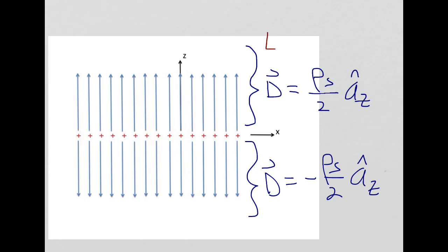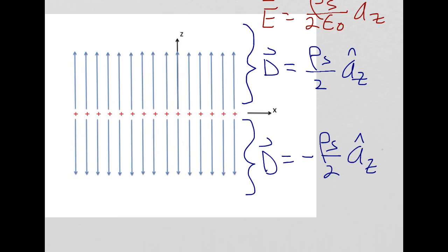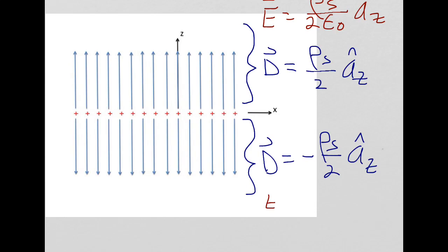The electric field intensity for z greater than zero is rho sub s over 2 times our permittivity in the z direction. And for z less than zero, the electric field intensity is rho sub s over 2 times the permittivity in the minus z direction.